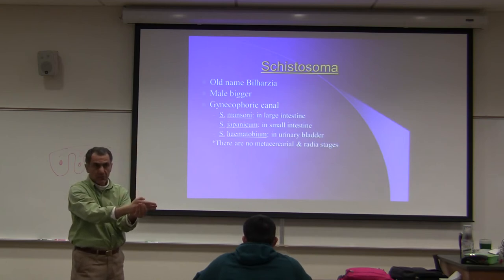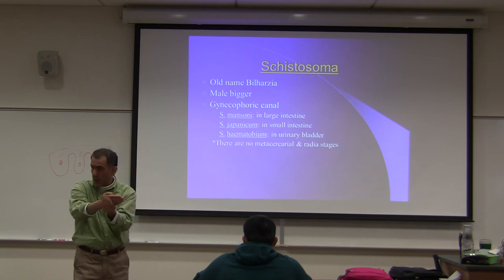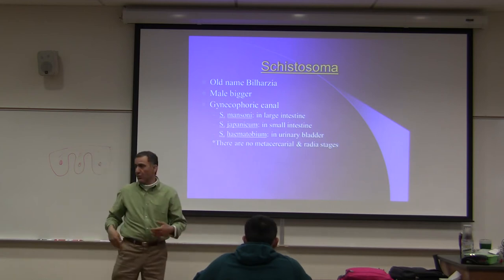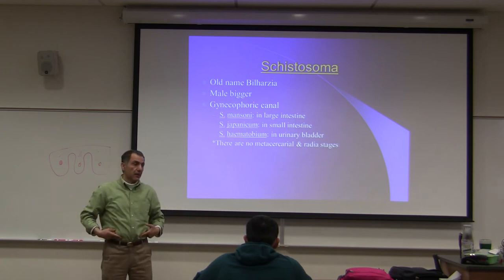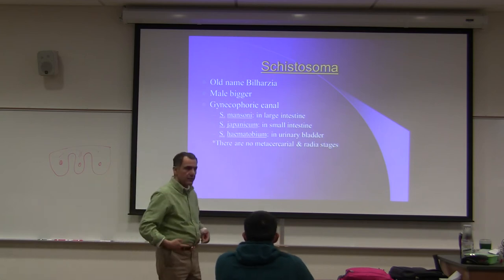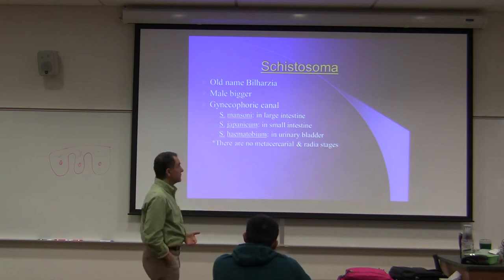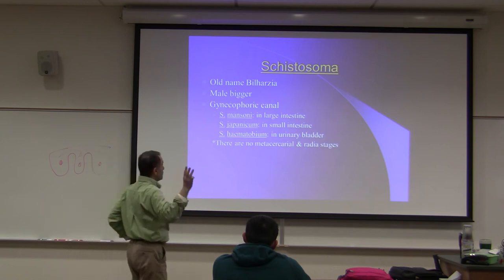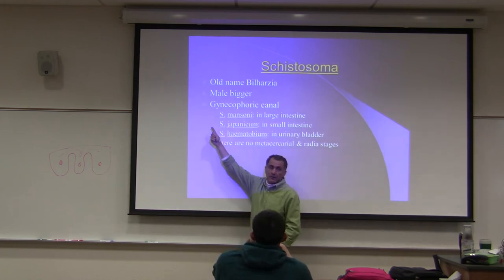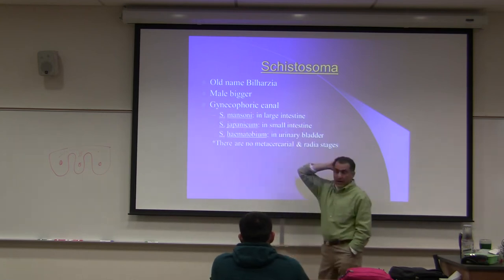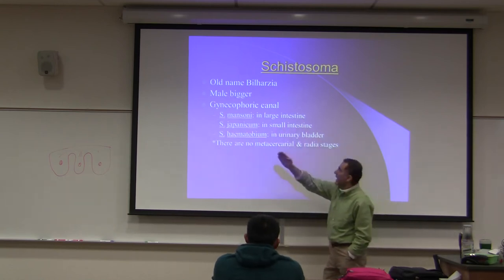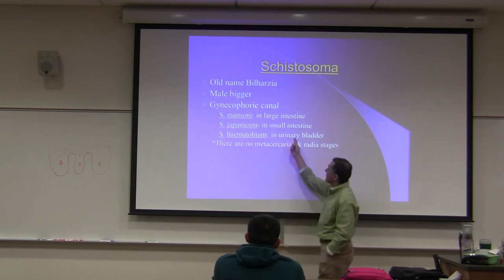The gynecophoric canal is a groove in the male that the female can go into for copulation. Some species require the female to enter the gynecophoric canal before it becomes mature - similar to how human egg doesn't complete second meiosis until sperm reaches it. There are three different species of Schistosoma: Schistosoma mansoni is found in the veins of the large intestine; Schistosoma japonicum is found in the small intestine blood vessels; and Schistosoma haematobium is found in the urinary bladder.